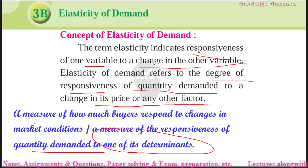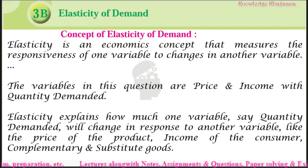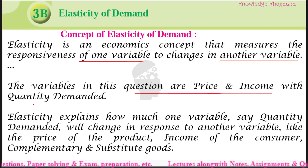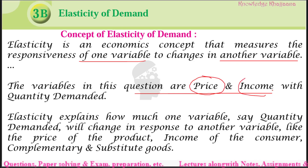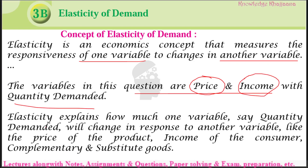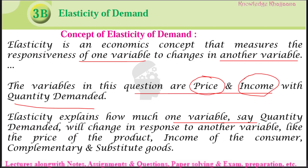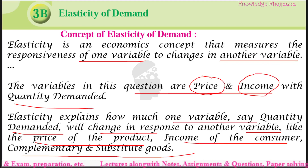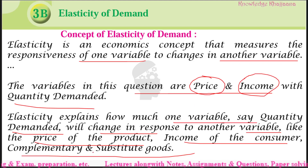Price affects the quantity demanded, as well as the income of the consumer affects the quantity demanded. Elasticity explains how much one variable — for example, quantity demanded — will change in response to the other variable, like the price of the product, or the income of the consumer, or complementary and substitute goods. With these variables, how much the quantity demanded varies.